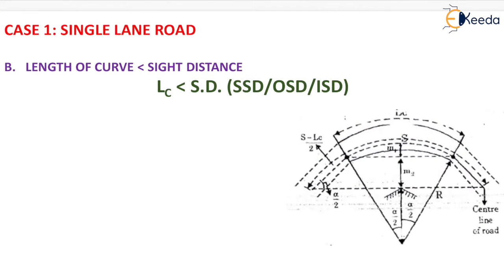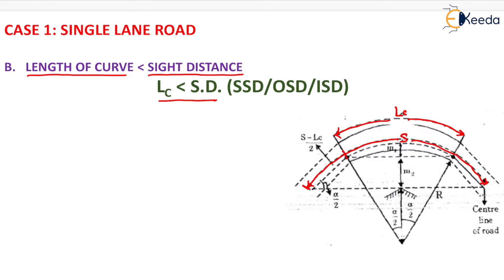Now we move to the second condition: length of curve is less than side distance. In this case, the figure changes — the length of curve (Lc) is shown, and the remaining distance beyond the curve end is equal to (S minus Lc) by 2, while the radius of the curve remains the same.